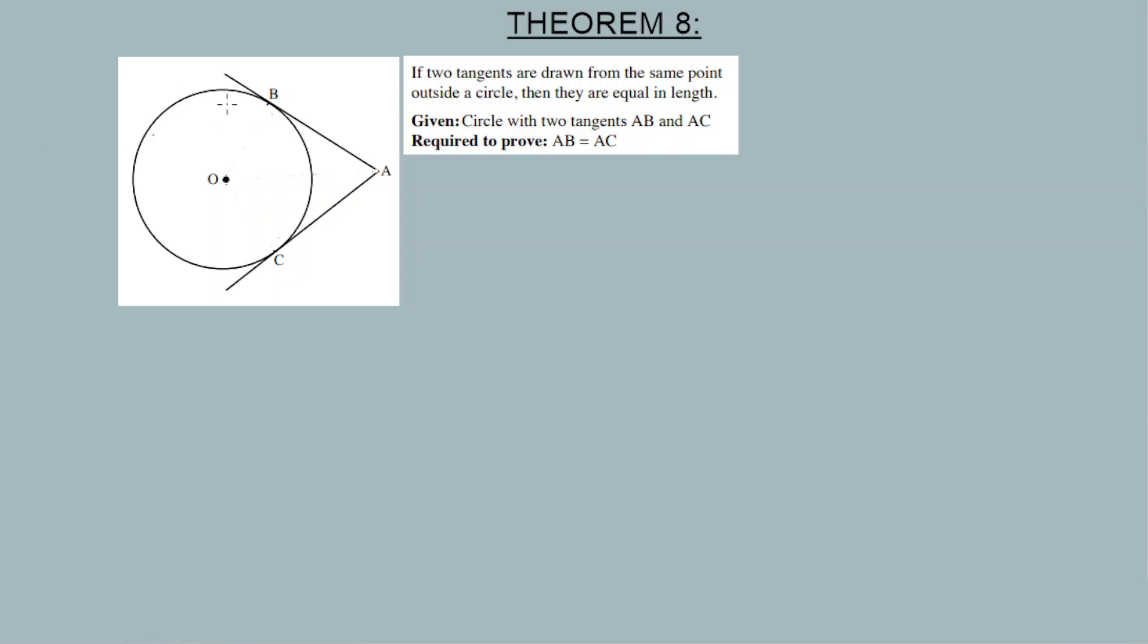The construction works like this: we construct the radius from O to B, then we construct another radius from O to C. Then we draw another straight line. This is our construction. So the idea is to have triangles, to have common shapes, to prove our lengths AB and AC.